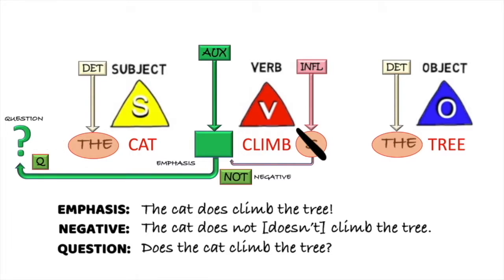Now, we learned that THE means a particular one. So, if we know which cat it is, we'll say THE cat. But if it's ANY cat, we can say A cat. So we get a cat does climb the tree for emphasis, a cat doesn't climb the tree in the negative, and does a cat climb the tree for the question.